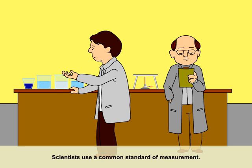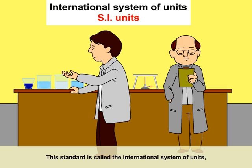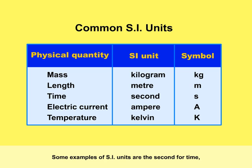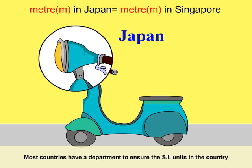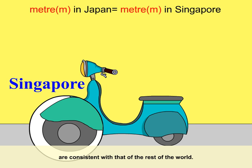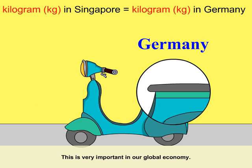Scientists use a common standard of measurement. This standard is called the International System of Units, which is commonly known as the SI units. Some examples of SI units are the second, for time, and the kilogram, for mass. Most countries have a department to ensure that the SI units in the country are consistent with that of the rest of the world. This is very important in our global economy.